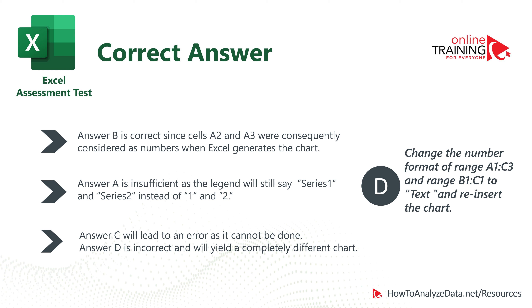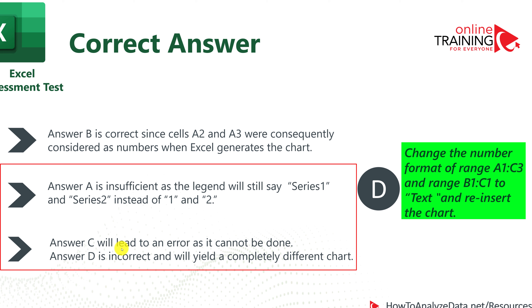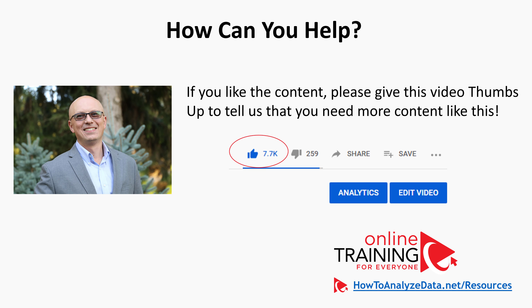To recap: the correct choice is D — change the number format of ranges A1:C3 and B1:C1 to text and reinsert the chart. Answer A is insufficient as the legend will still say Series 1 and Series 2 instead of the correct labels. Answer C will lead to an error. Answer B is incorrect and yields a completely different chart. These are the types of questions you frequently see on intermediate and advanced Excel tests. If you like the content, please give this video a thumbs up.